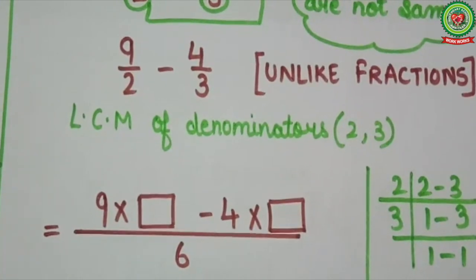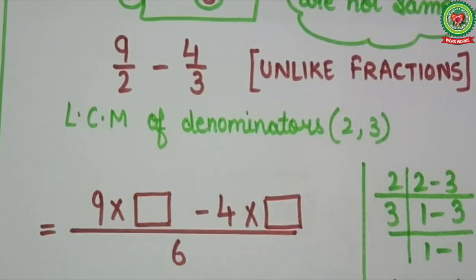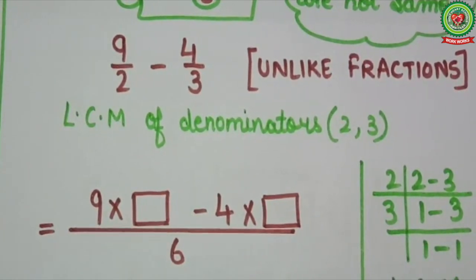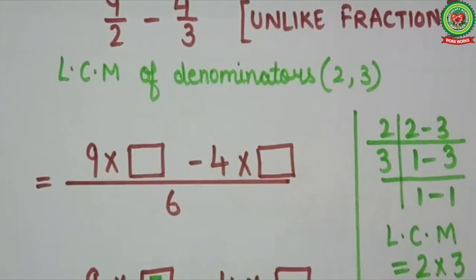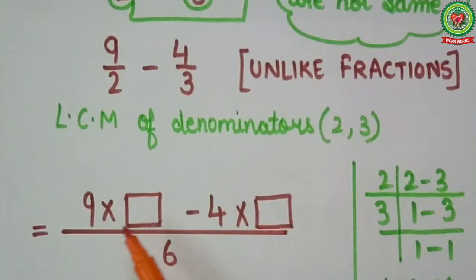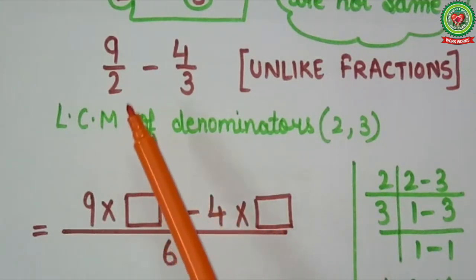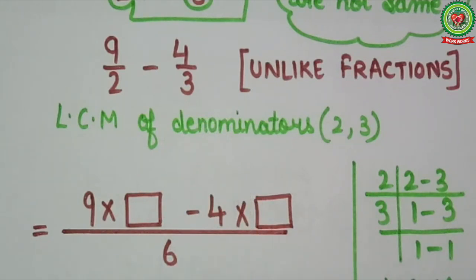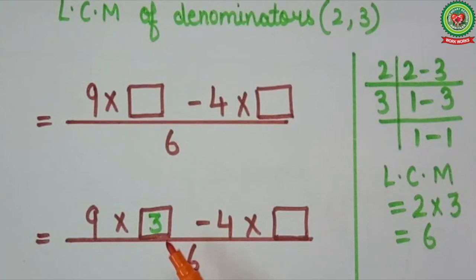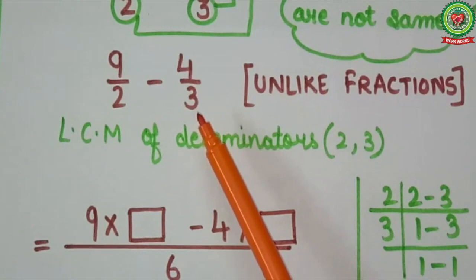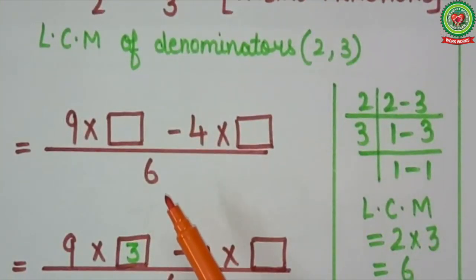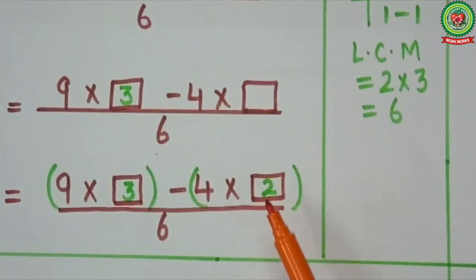Step 3: change these fractions into like fractions. Like fractions have a common denominator, so here common denominator equals to 6, which is our LCM. Then multiply numerators with a suitable number so that denominators become equivalent to 6. In table of 2, 6 will come at 3, so we will write 3 in the first bracket. In the second fraction, denominator is 3; in table of 3, 6 will come at 2, so in the second bracket we will write 2.